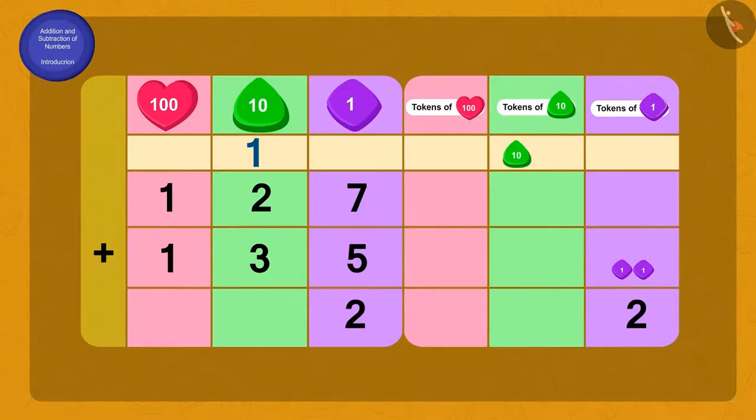And now how many tokens are left with us? 2 tokens of 1. Now how many tens do we have? 6 tens.